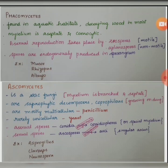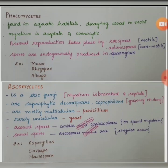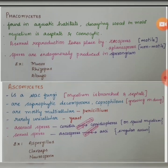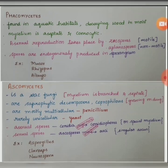Endogenously means internally produced, and a sporangium is a receptacle which bears the spores. Examples of phycomycetes include Mucor, Rhizopus and Albugo.